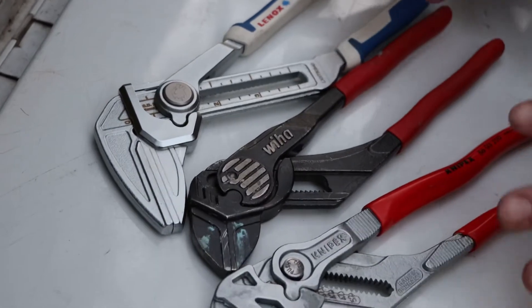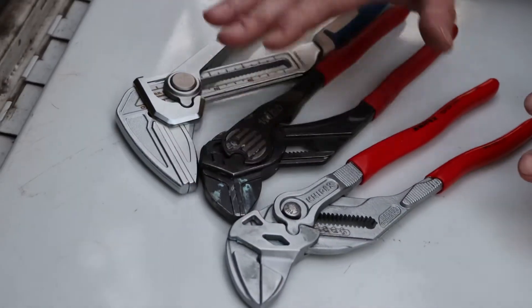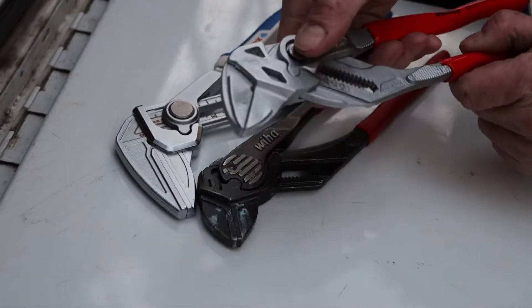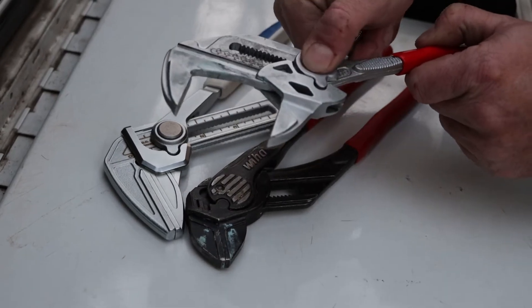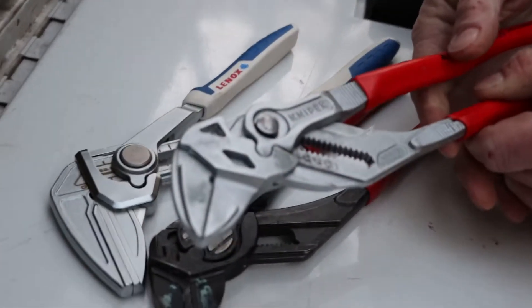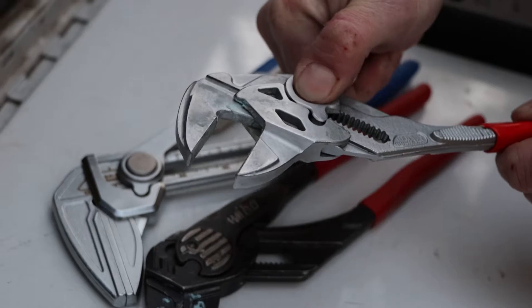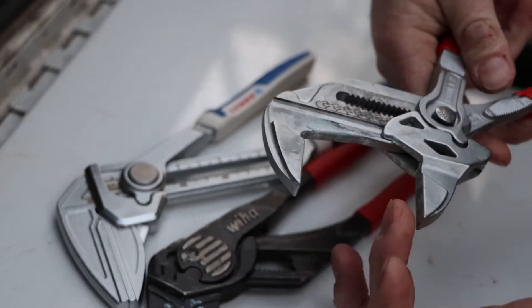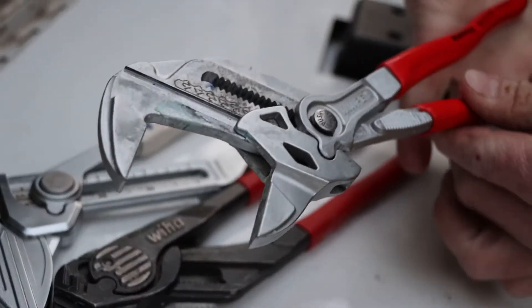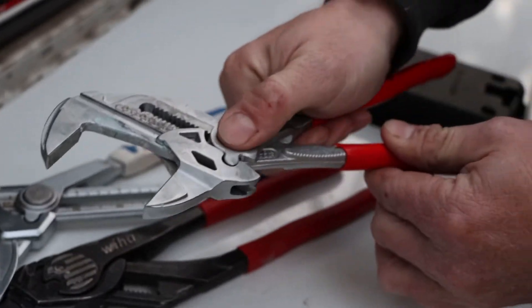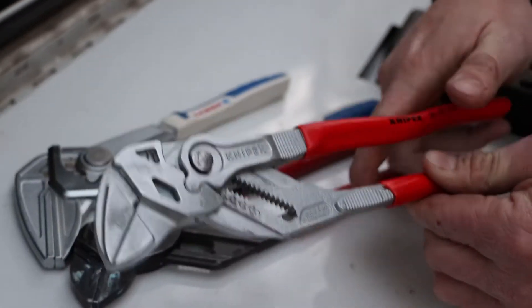Now each one of them has a specific advantage except for maybe the Weeha, which I'm not real fond of. The Knipex is really nicely made—you can tell it's the nicest of all three. Easy push button adjustment and the jaws get decently wide. Great comfortable handles, I really like them. These are pretty cool, probably my favorite out of the bunch.